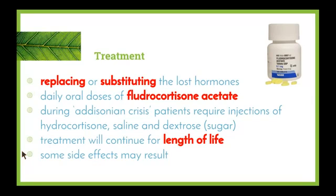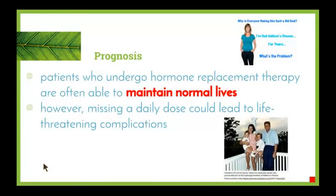Some side effects may result, as with most treatments available today. The prognosis for people with Addison's disease is generally positive — patients who undergo hormone replacement therapy are often able to maintain normal lives, as long as they take their daily dose of hormone replacement treatment. Otherwise, it could lead to life-threatening complications.